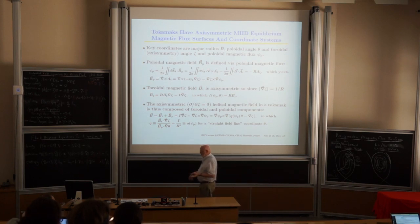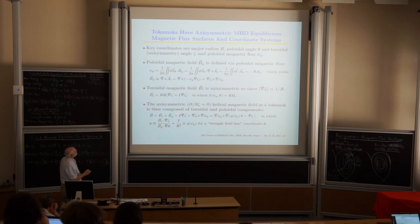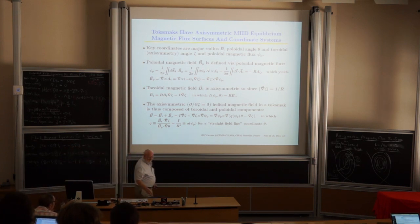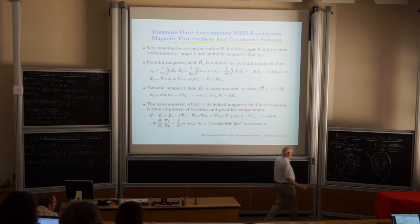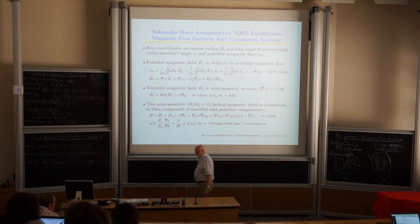A large fraction of how we describe the magnetic configuration is based on the poloidal magnetic flux. The poloidal field can be written in terms of the toroidal vector potential. We use major radius R from the magnetic axis — about six meters in ITER-type numbers.